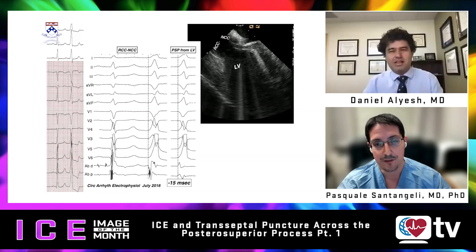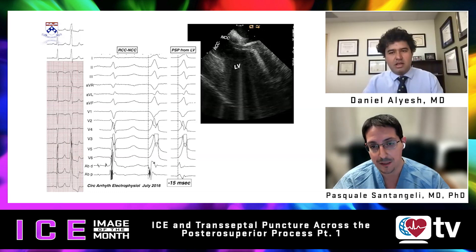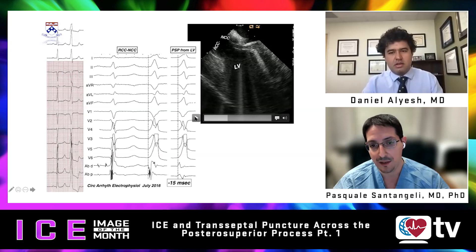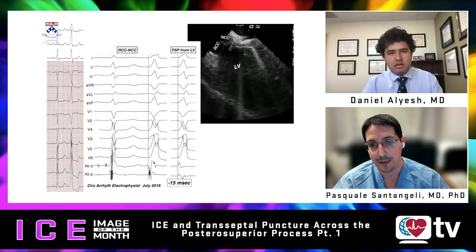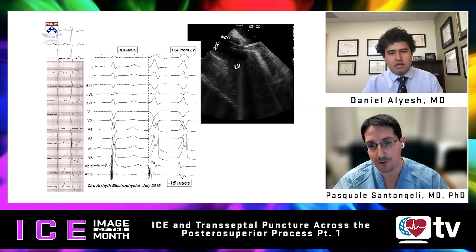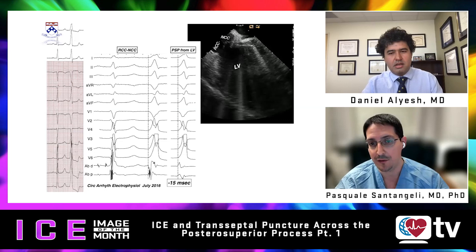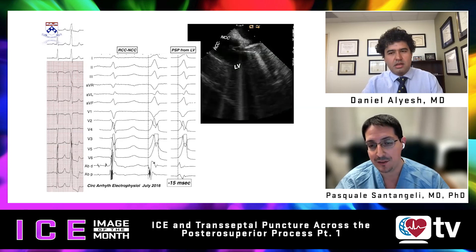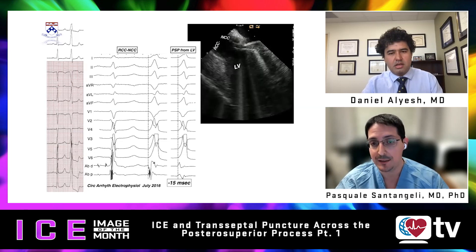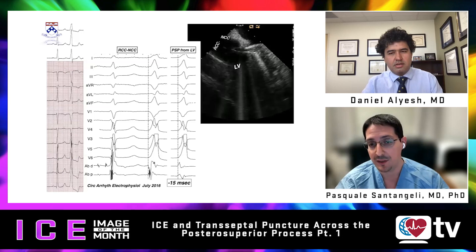In this case, on the left side of the image there is a sinus beat and a PVC beat. The PVC shows a left bundle branch block morphology with very early transition, inferior axis, fairly positive in lead II, and predominantly positive in lead III — consistent with a Parisian-type exit on the left side of the septum.